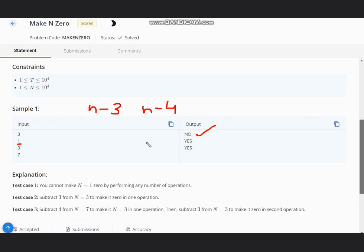Next, N equals 3. So 3 minus 3 gives us 0, so YES. In case of 7, first we subtract 3, so 7 minus 3 is 4, and 4 minus 4 is 0, so we output YES in this case. Now how to deal with this in terms of code?